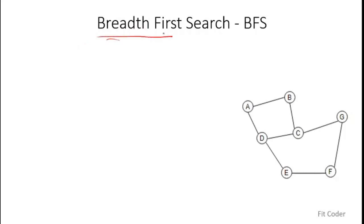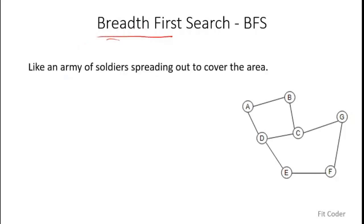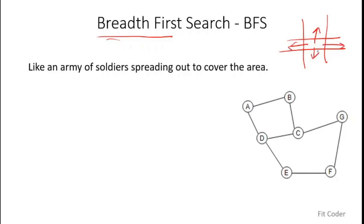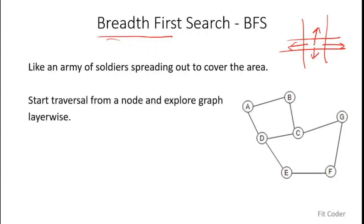Breadth first search is like an army of soldiers spreading out to cover an area. Let's say we are in a battlefield and come across a junction with four directions and want to explore all four to find enemies. We send some soldiers in each direction, spreading out the entire army to cover the area. That is the basic essence of breadth first search. One important term to note here is that we explore the graph layer-wise.